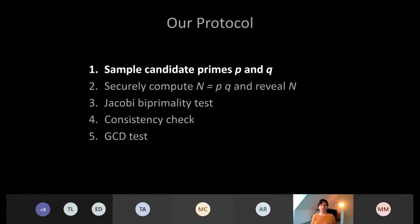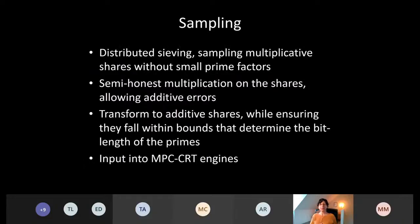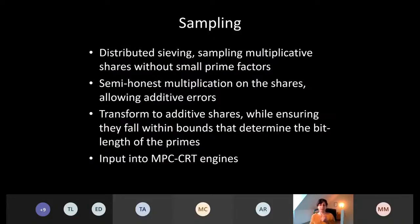Let's look at the interesting parts of each of the five steps, starting with sampling. We sample multiplicative shares to increase our chances of P and Q being prime. For efficiency reasons, we multiply these shares to create additive shares in a semi-honest fashion, allowing the parties to insert additive errors. In our setting this is acceptable because the product N will later be opened, allowing us to check it falls within preset bounds and is co-prime to M_sample.